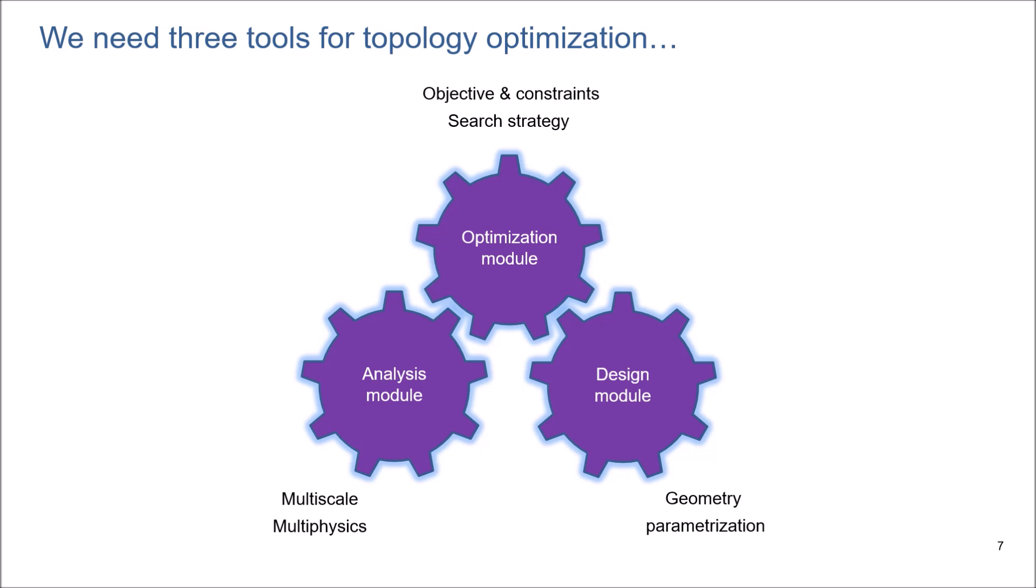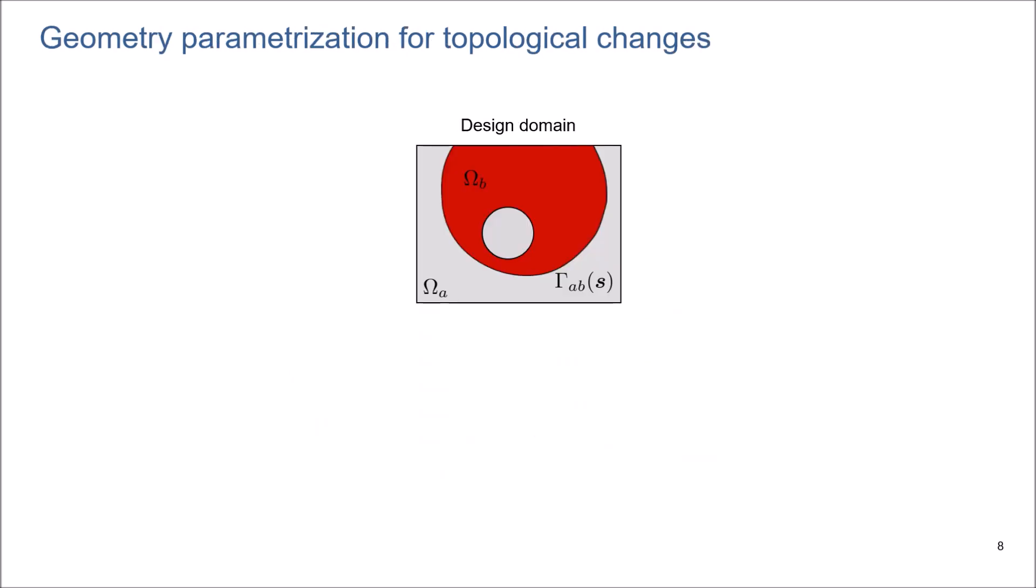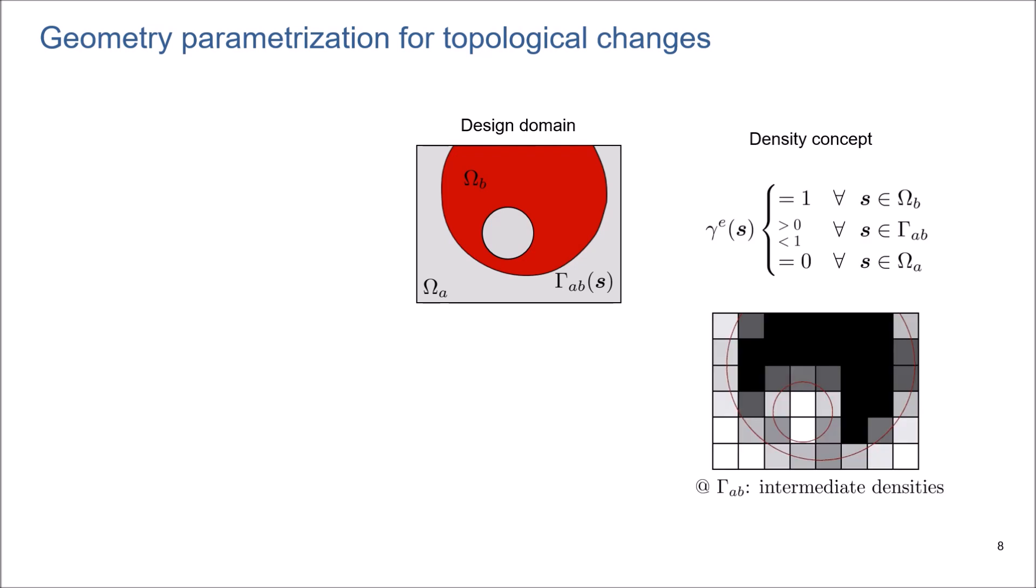We use geometric parametrization to track the topological changes during the design evolution. For example, let's say I have a design domain like this with phases A and B, and the interface between these two phases. For geometric parametrization, we could use two well-established approaches. The first is the density concept introducing fictitious density to penalize material properties. For example, when I am in phase A, this fictitious density will be 0, 1 in phase B, and creating a blurred design at the interface. The blurred interface is one of the disadvantages of the density concept, which I will discuss in a future video, how to remedy this issue, and how to achieve 0 or 1 binary solution.